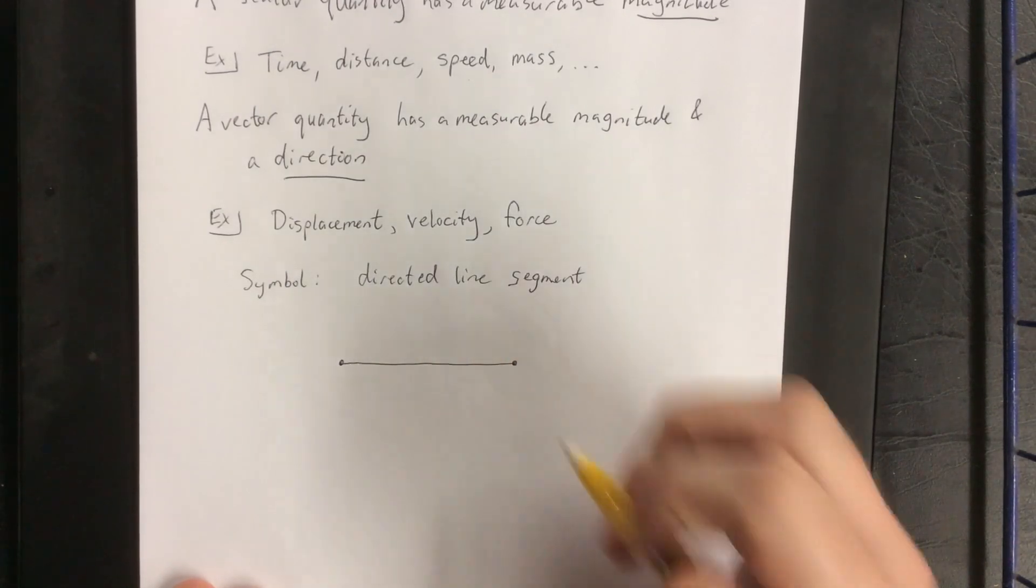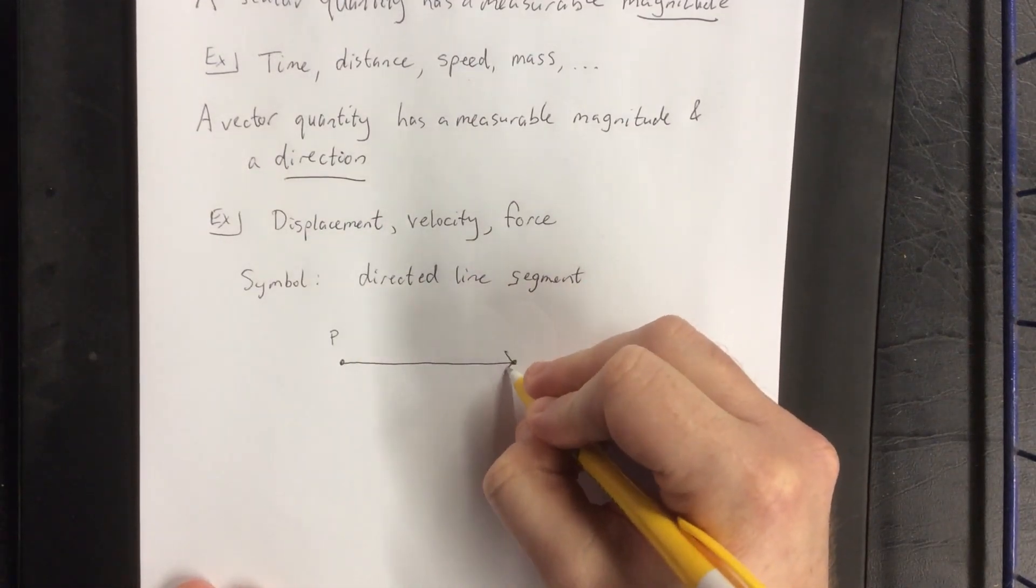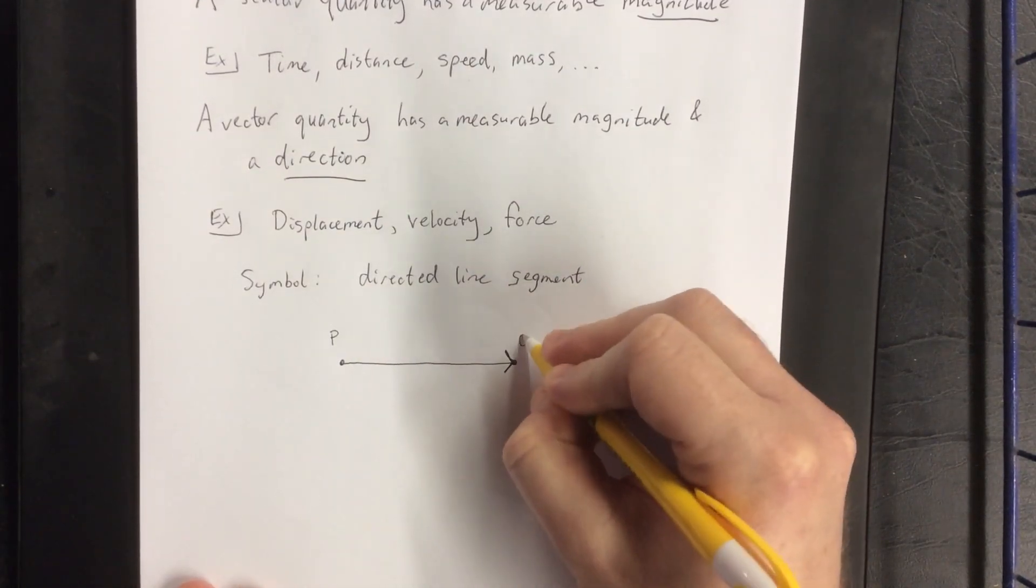It becomes a directed line segment as soon as we specify a starting point and an ending point by using an arrow going into the second point.